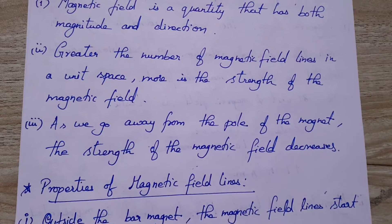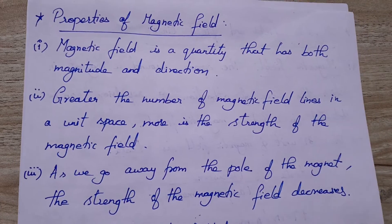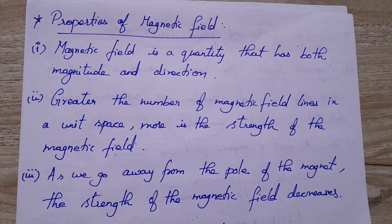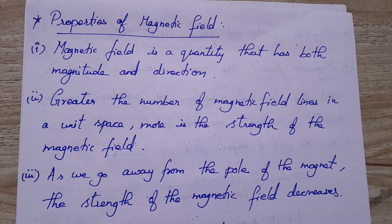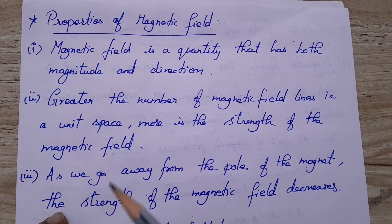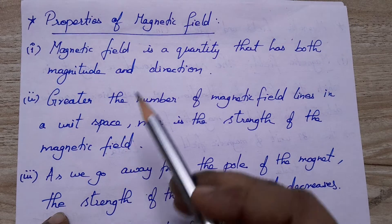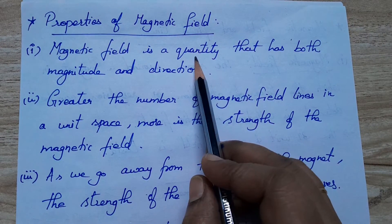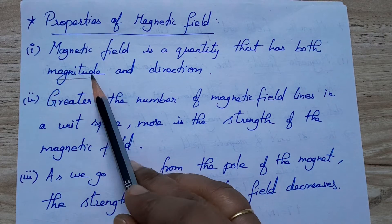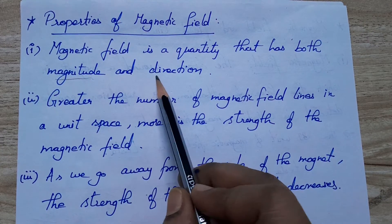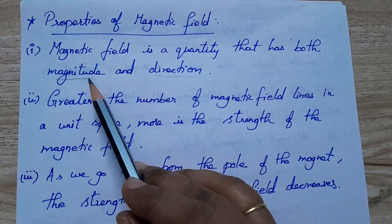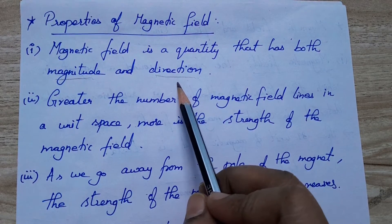So we have seen magnetic field and magnetic field lines. Now, what are the properties of the magnetic field? Magnetic field is a quantity that has both magnitude and direction — it has some value as well as a particular direction only.